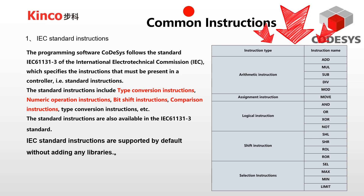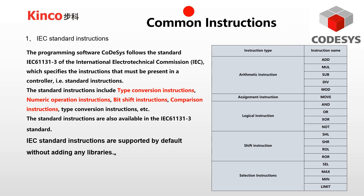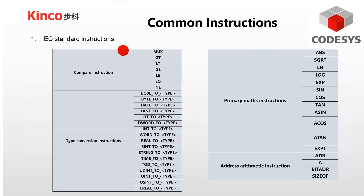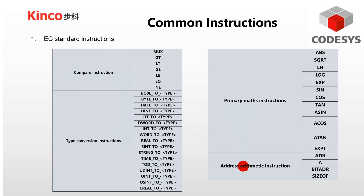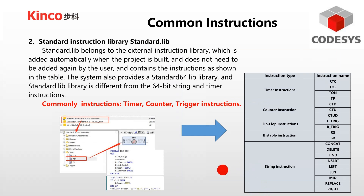Here on the right side of the table, you can see the instructions and their corresponding names. You can also take a screenshot. The instruction types and names are listed here: the compare instruction, type conversion instruction, primary maths instruction, and address arithmetic instruction.